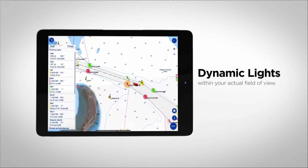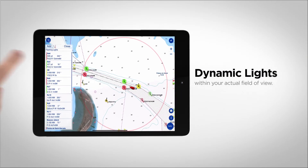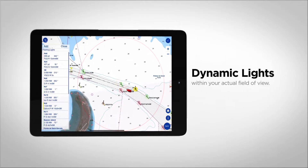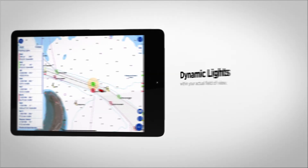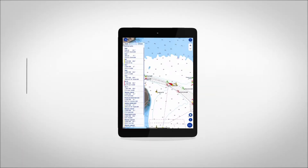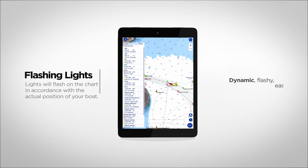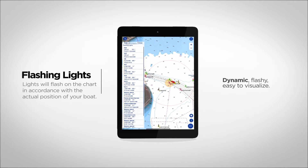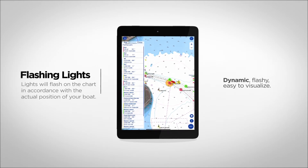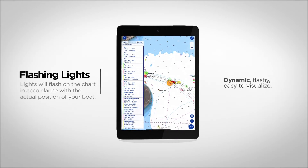This new feature intuitively represents the light sectors according to your boat's position and field of vision. It can also flash the navigation lights on the map according to your position. Only lights within your actual field of vision are shown as highlighted and flashing.